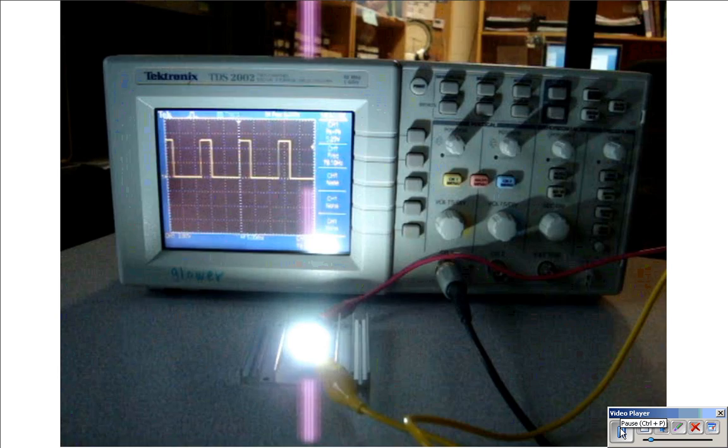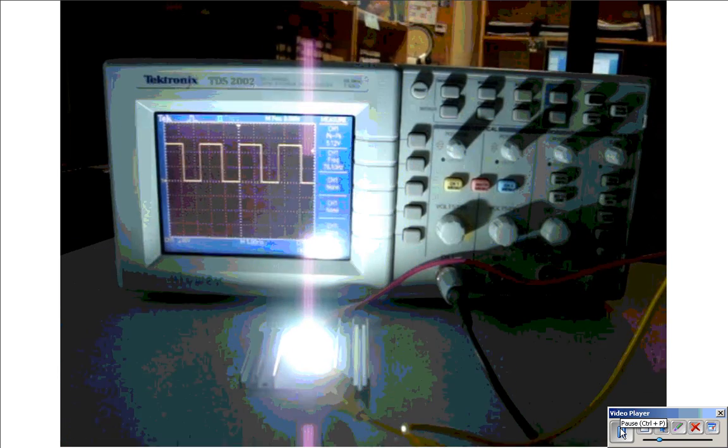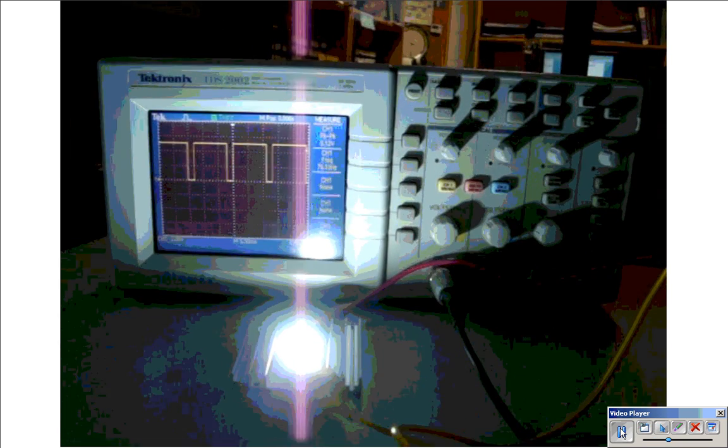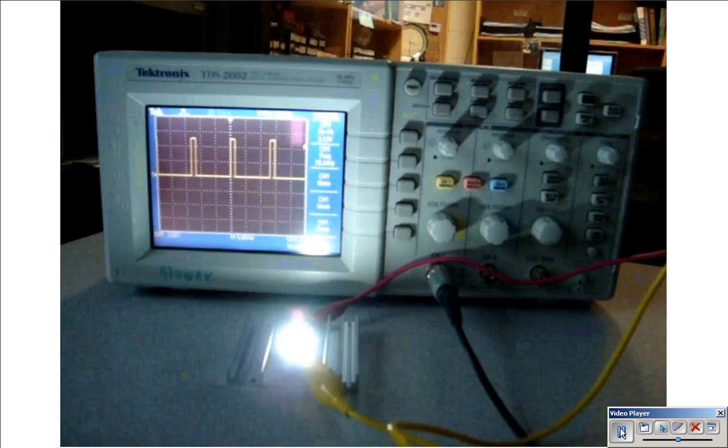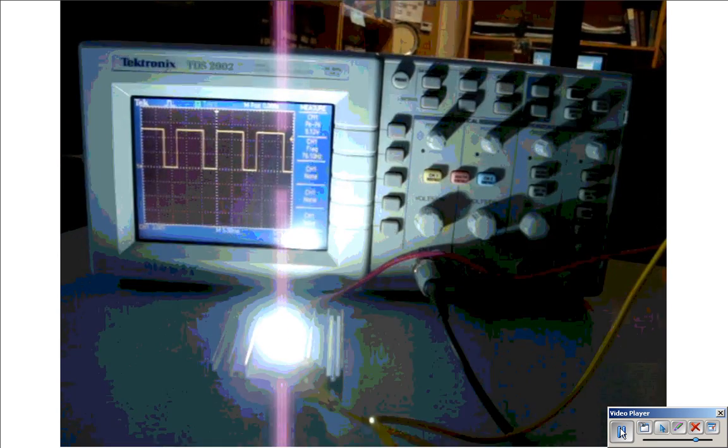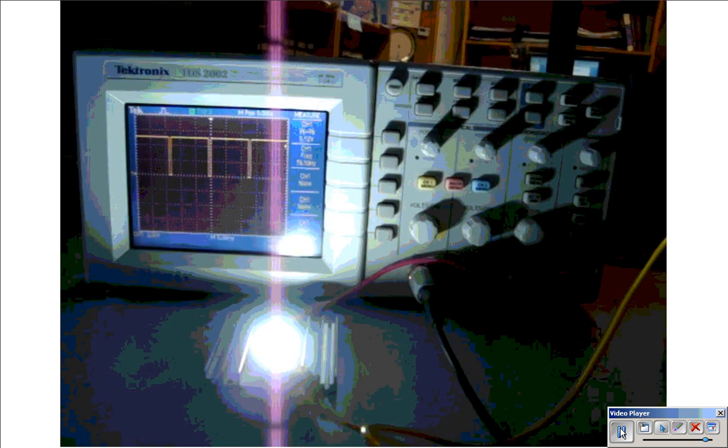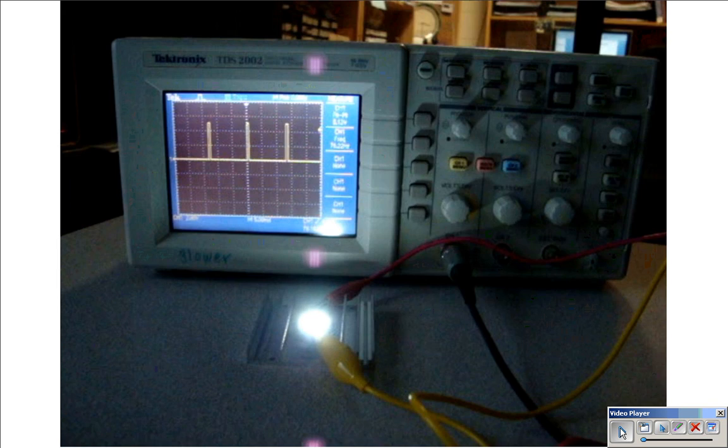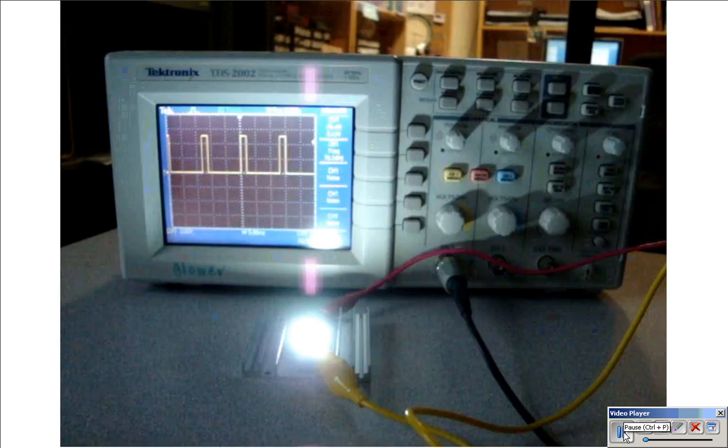As an illustration, here is pulse width modulation driving a 10 watt LED. And if you notice, the 10 watt LED casts quite a bit of a shadow. It's rather blinding to look at. I can vary the brightness using pulse width modulation just like I did with the 60 milliwatt LED.